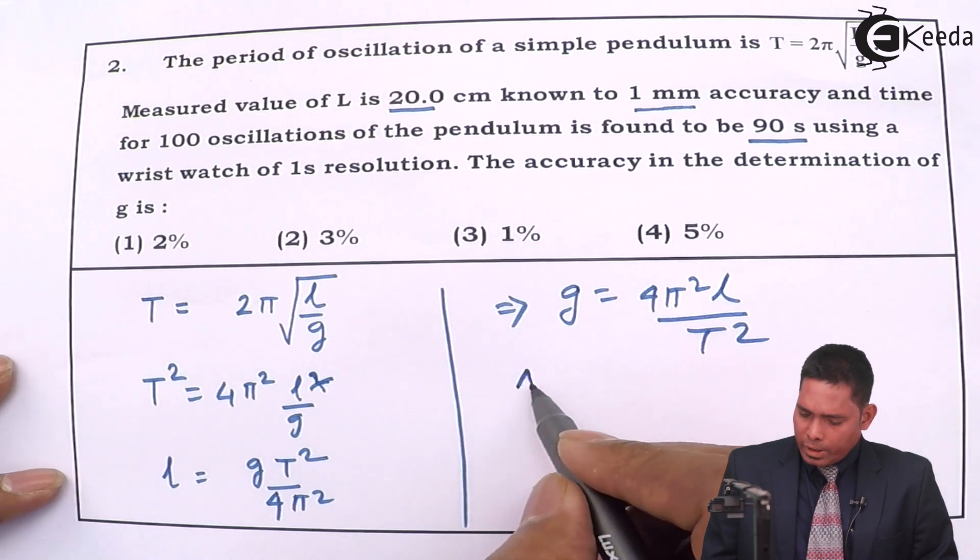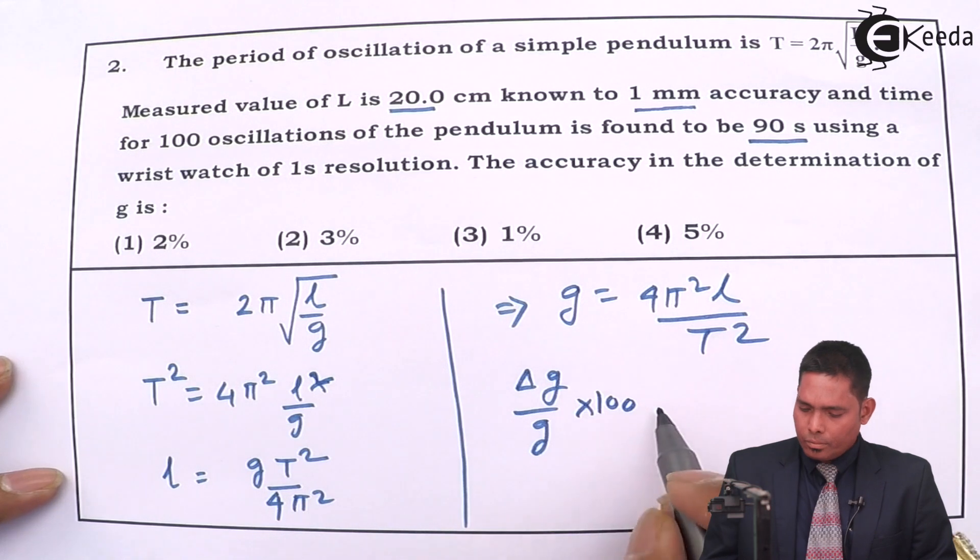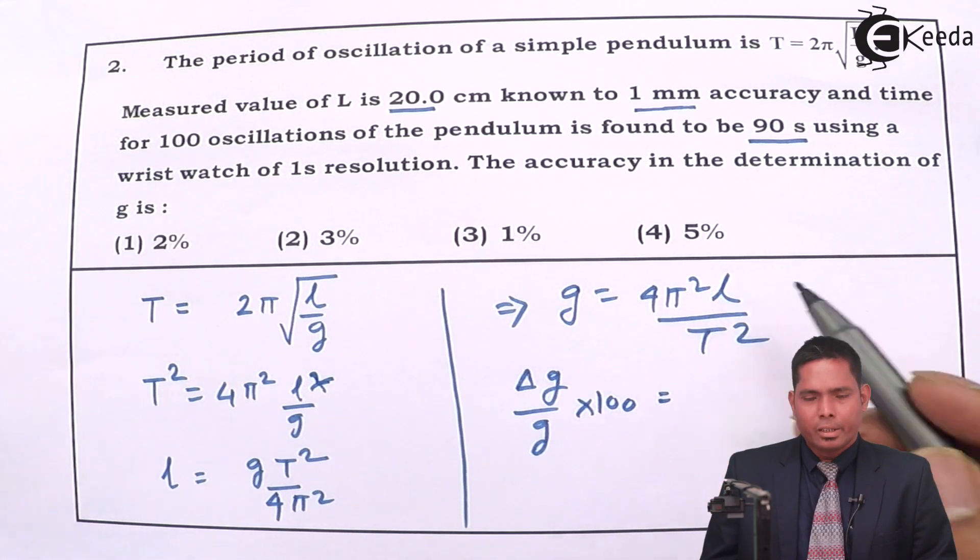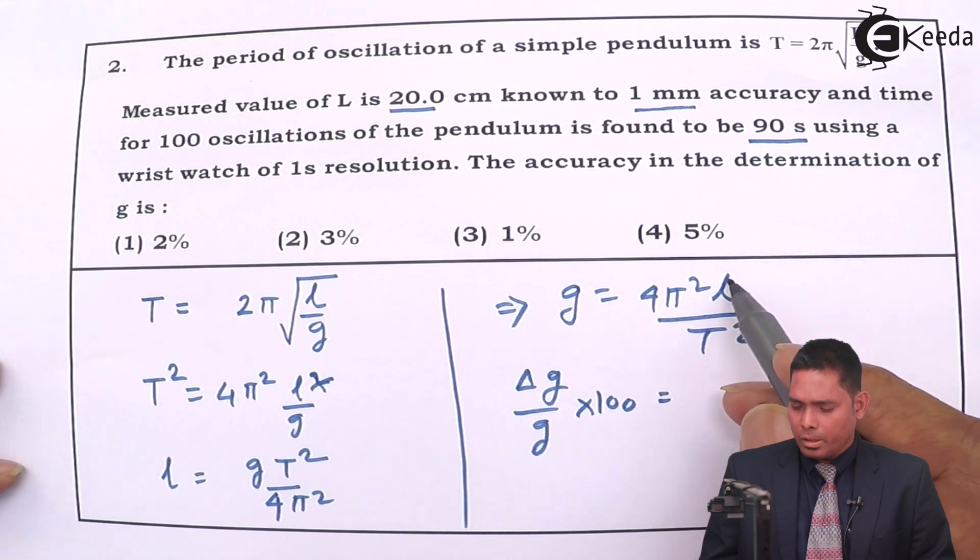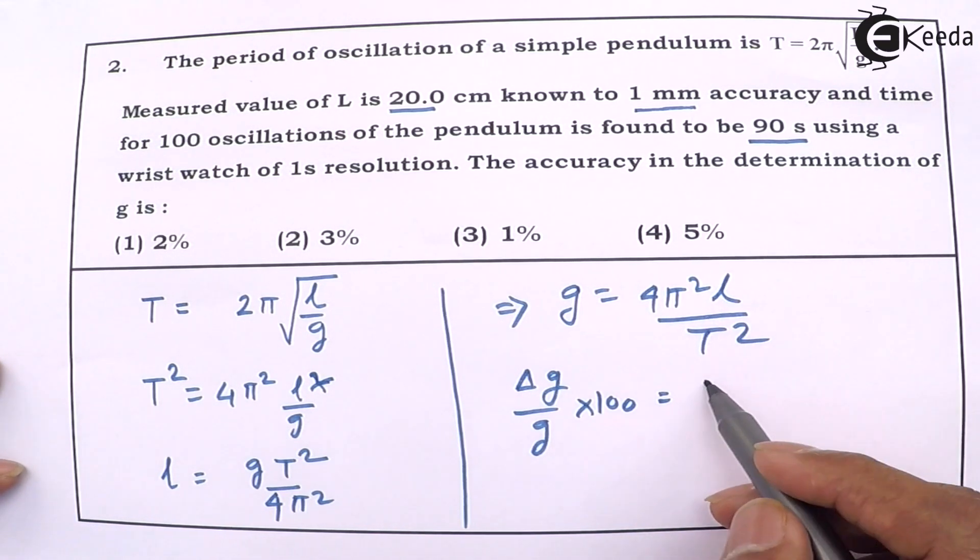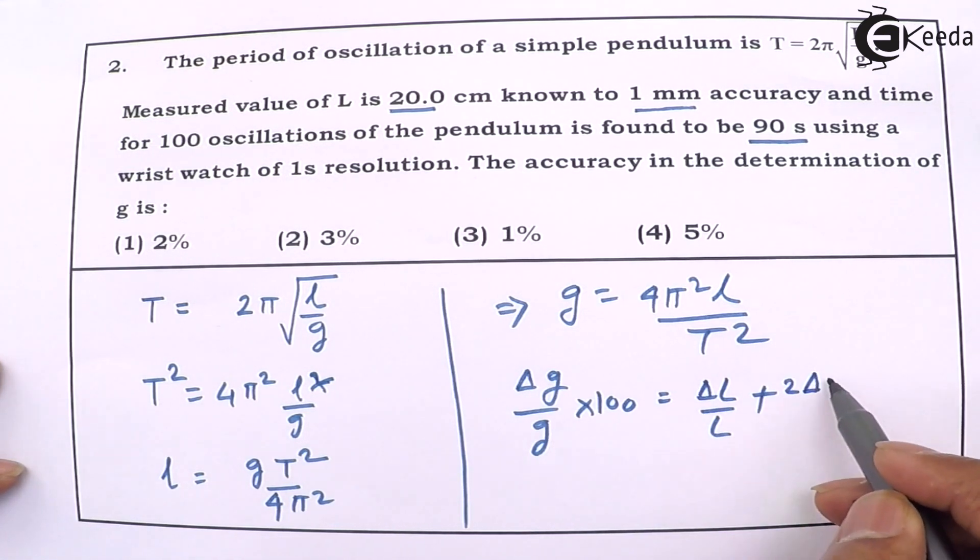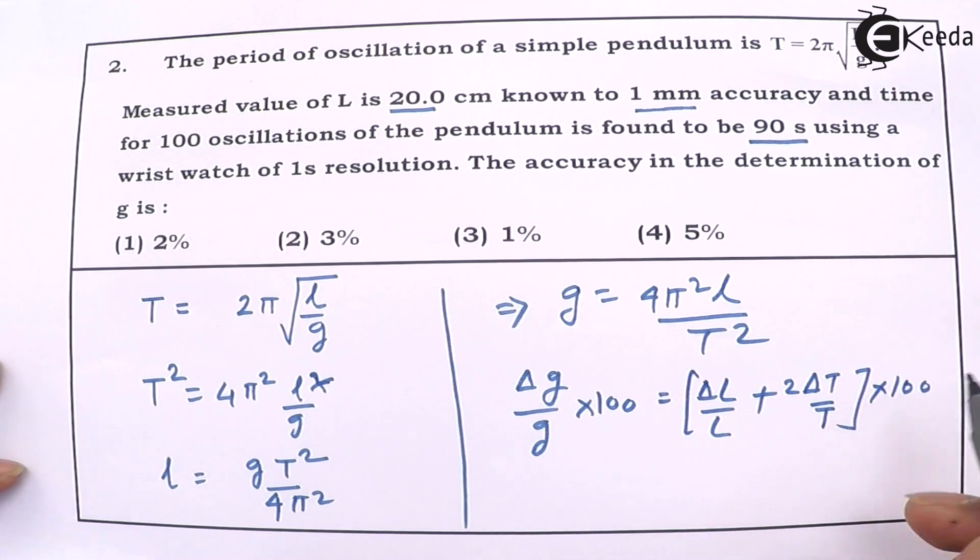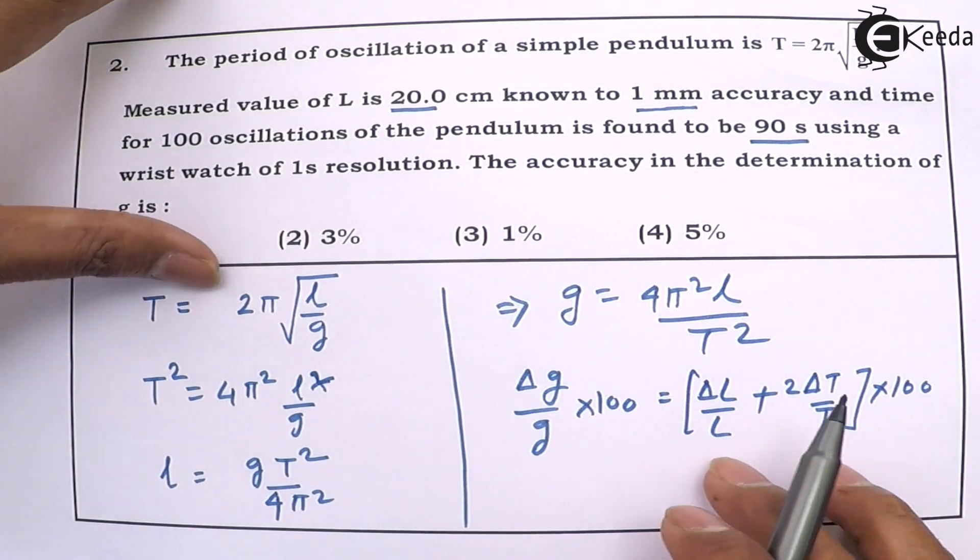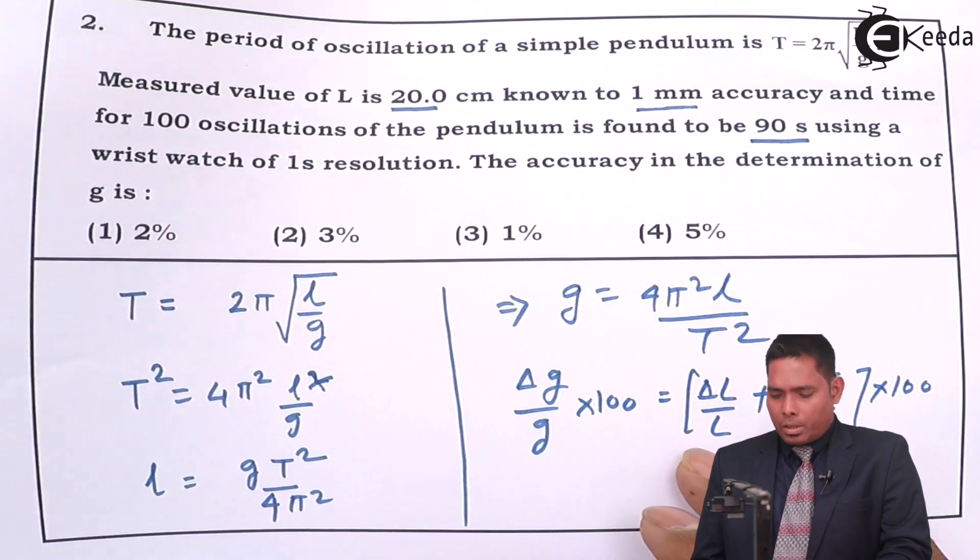We know that Δg/g × 100 will be—4 and π² don't introduce any error, so only error will be in terms of l and t. This will be Δl/l plus two times Δt/t, the whole thing into 100. So this is the formula that we are going to use. To use the formula we have to put the values properly.